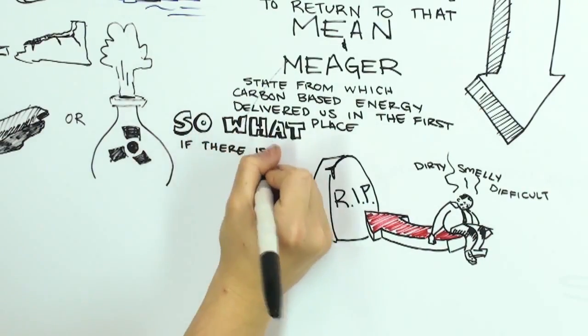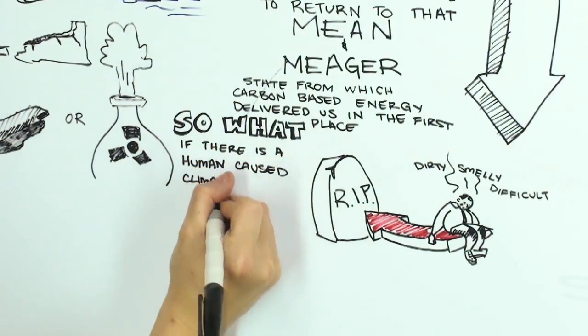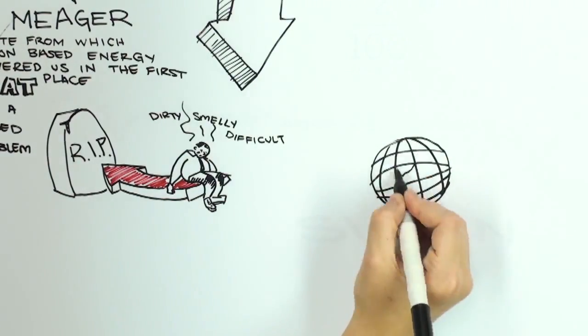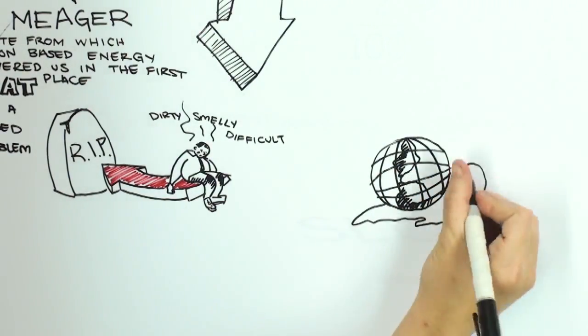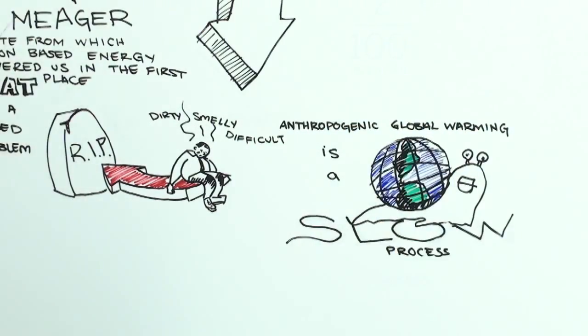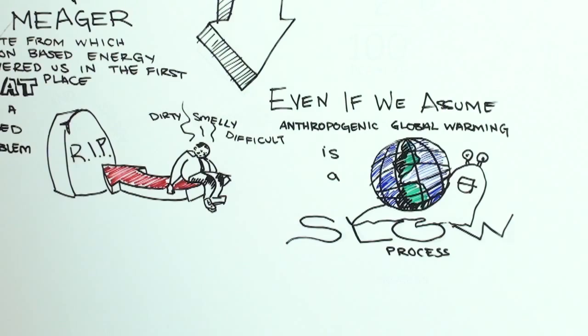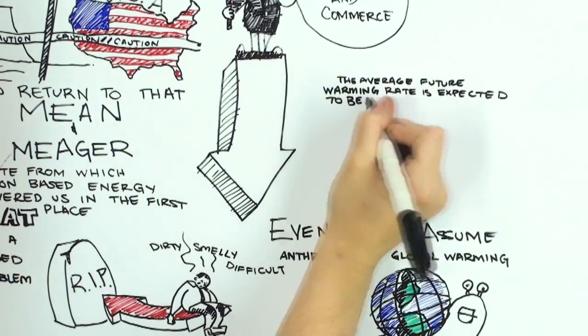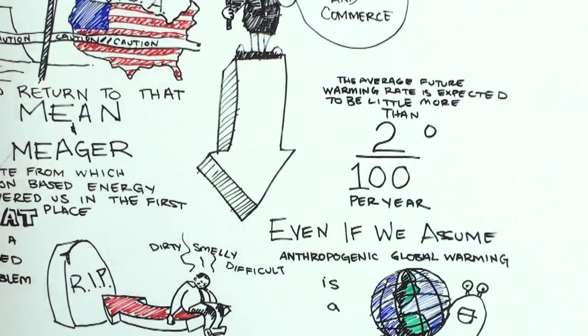If there is even an actual human-caused climate problem, which as of yet remains mostly conjecture? Well, to the extent that it actually exists, anthropogenic global warming is a slow process. Even if we assume that the current predictions of a sensitive climate system are correct, the average future warming rate is expected to be little more than two hundredths of a degree Celsius per year.